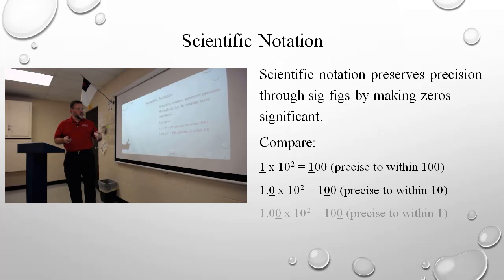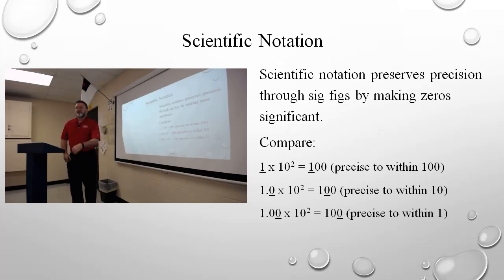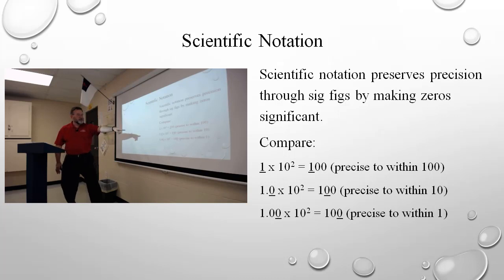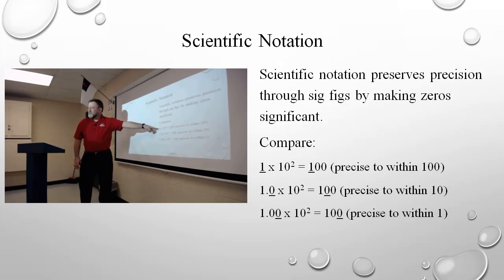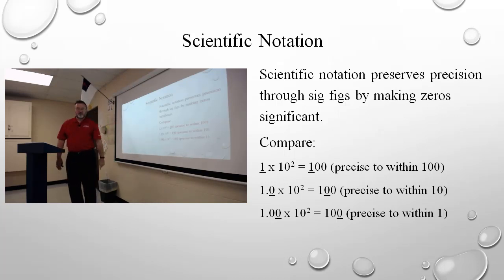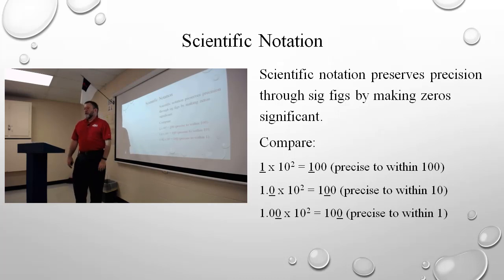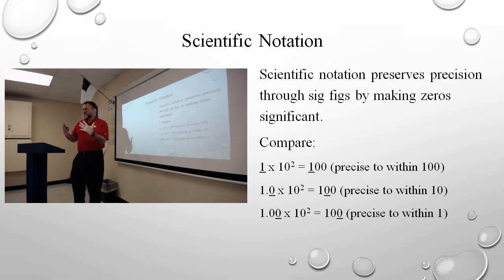And we keep drilling in even farther. Look at this: one point zero zero. When you were rookies at this like four days ago, one and one point zero and one point zero zero — you'd say they're equal. And now you're going, not even close. They may be the same number, but they're not the same information. There's a lot more information there than what appears.